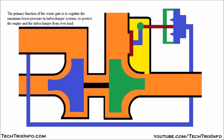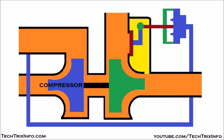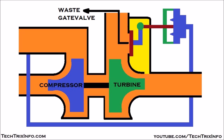Now let's identify all the components of a wastegate turbocharger. The compressor is shown in blue color, and we have the turbine shown in green. Then there is the wastegate valve, and the swing valve control, which actually activates or helps in the movement of the wastegate valve.